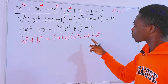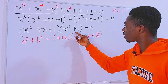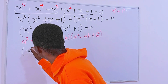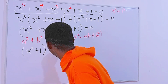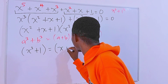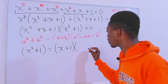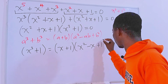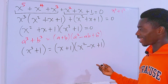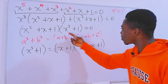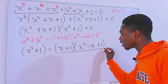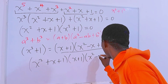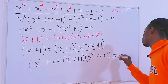We know that a³ + b³ is equal to (a + b)(a² − ab + b²). This is an algebraic identity. So we can rewrite x³ + 1 as (x + 1)(x² − x + 1). In place of x³ + 1, we replace it with this factored form. Therefore, the equation becomes (x² + x + 1)(x + 1)(x² − x + 1) = 0.